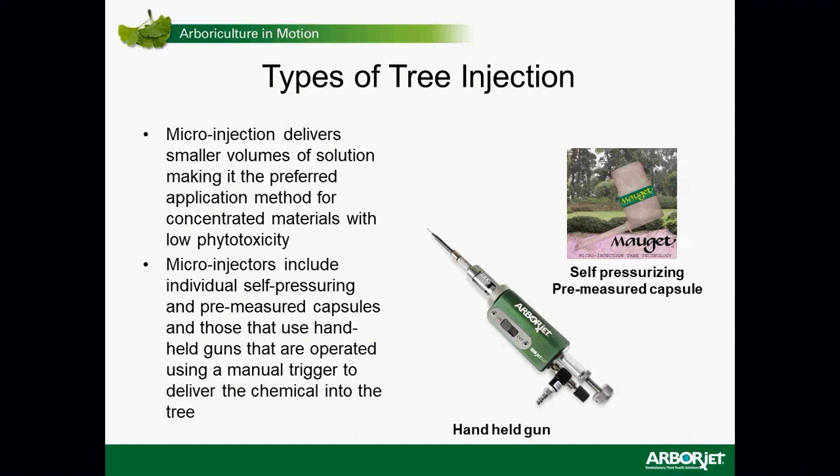Microinjection devices use smaller, more concentrated volumes — they are not diluted. Some are preloaded, individualized, self-pressuring, premeasured capsules like the Mojo cap, loaded with materials that generally have lower phytotoxicity. Some are handheld guns like the QuickJet Air, operated by a trigger mechanism to deliver the chemical into the tree.